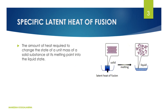Now we are moving to the specific latent heat of fusion. Fusion means the change of state where a solid turns into a liquid. The specific latent heat of fusion is the amount of heat required to change the state of a unit mass of a solid substance at its melting point into the liquid state. In the diagram you can also see this solid turning into liquid, and that location involves the specific latent heat of fusion.